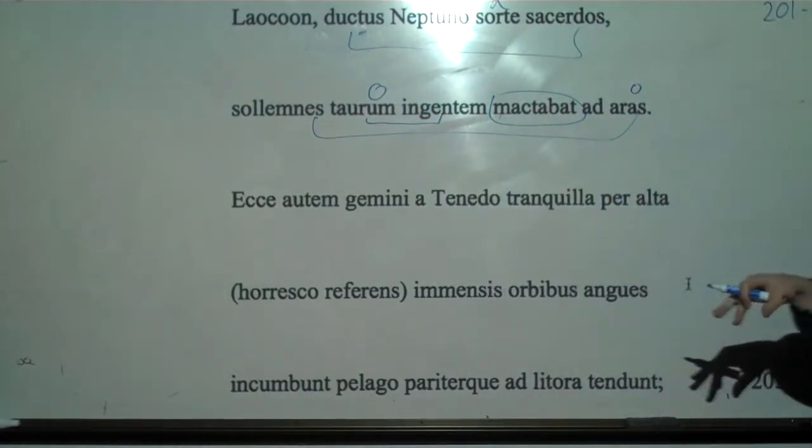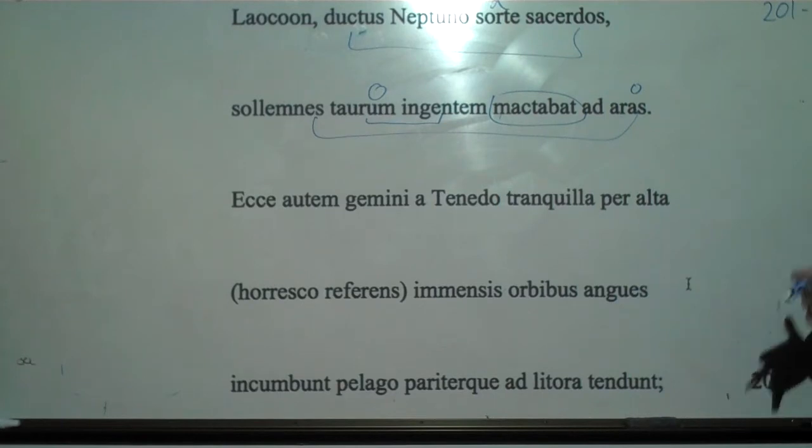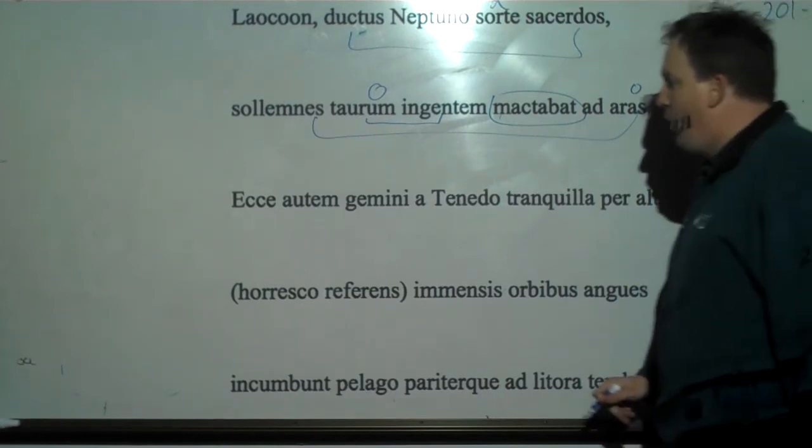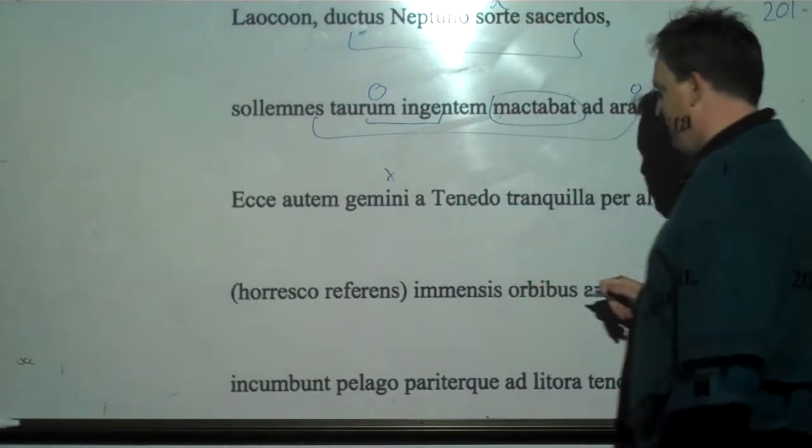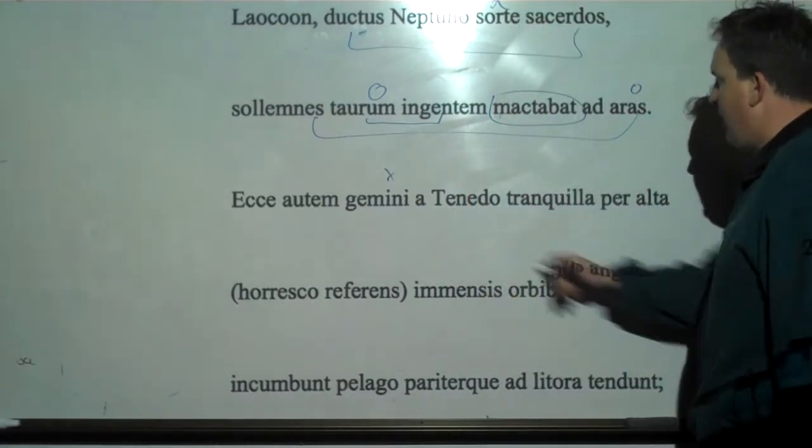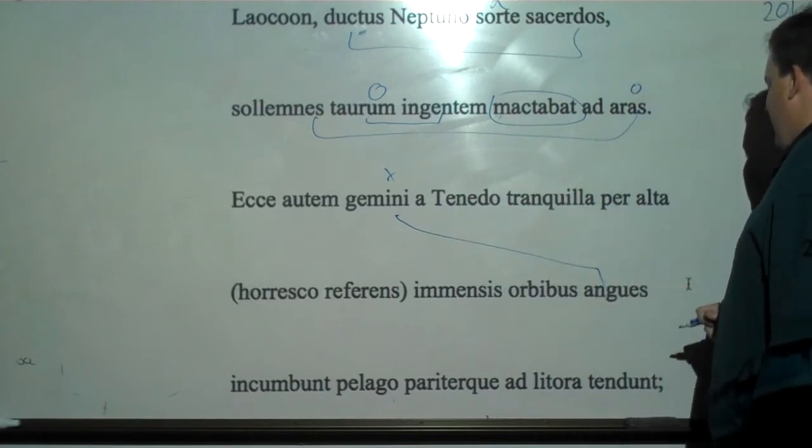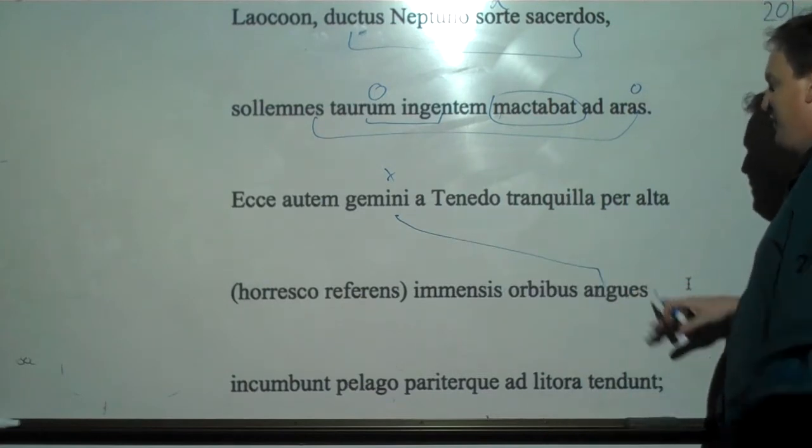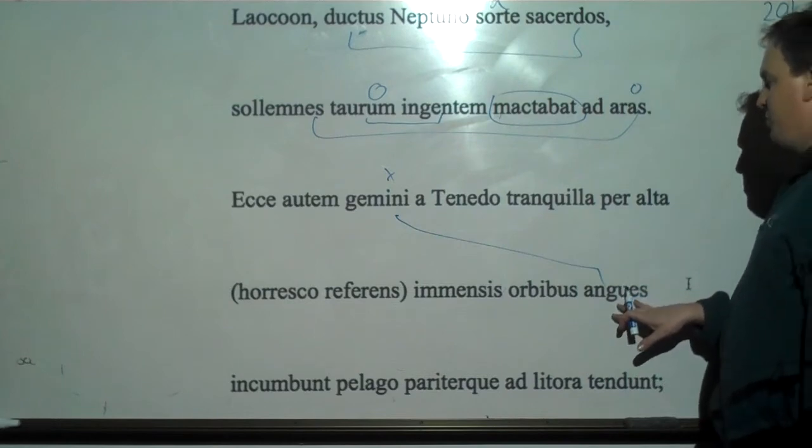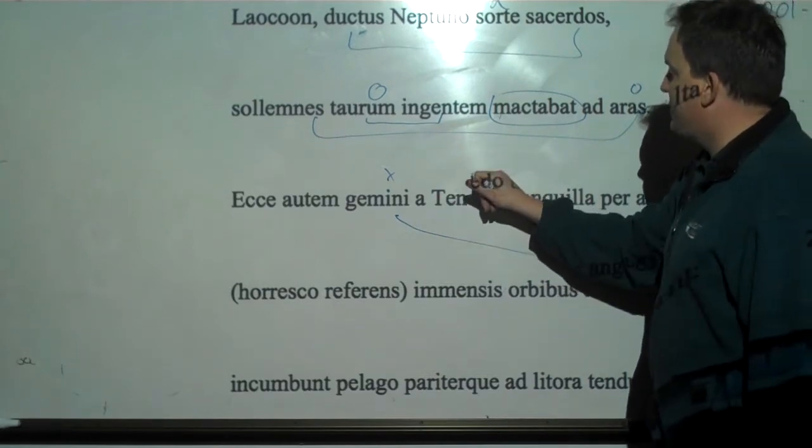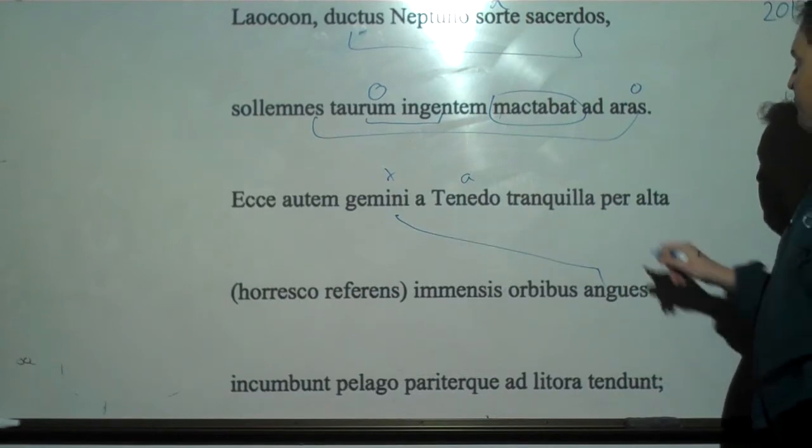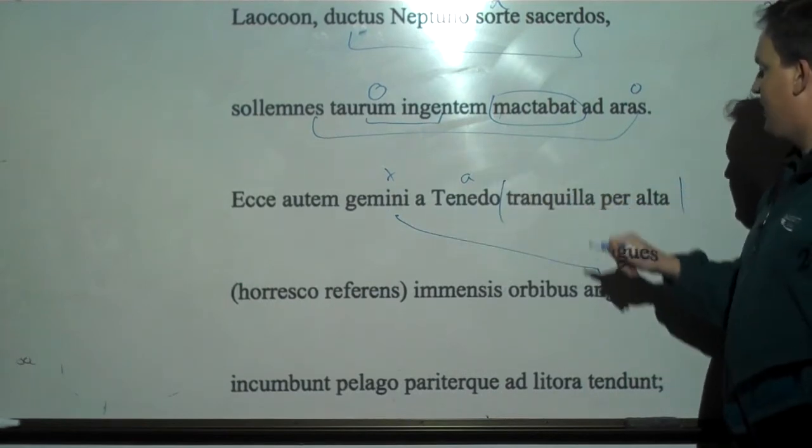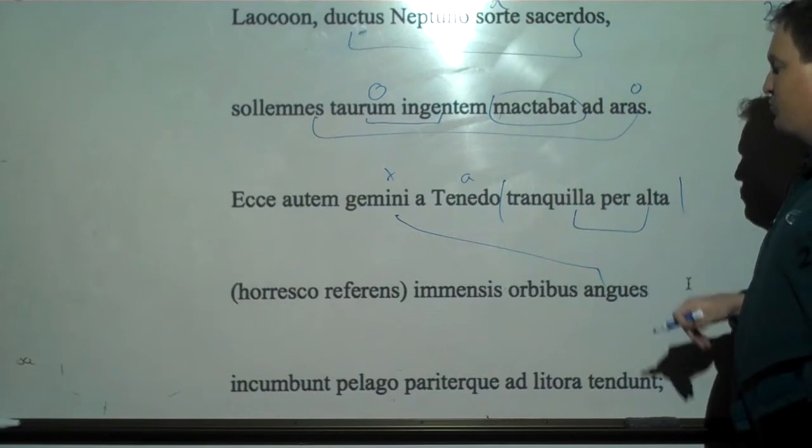Ecce autem. Whenever you see ecce autem in Virgil, I like to think of it as being like a watch out here. Behold, ecce. Gemini. Twin. And where's Gemini going with? Angues. So that's very far separation. Twin serpents. From Tenedo, from the nearby island. This of course is where the Greeks are right now. Through the tranquil waters or the tranquil deep.